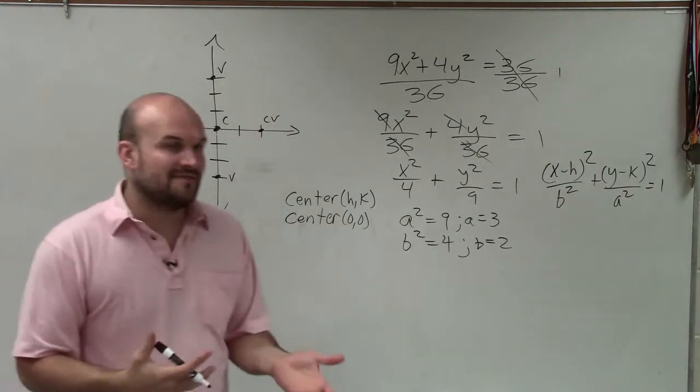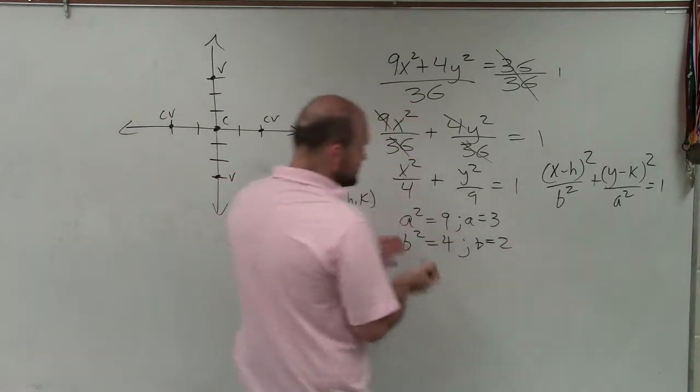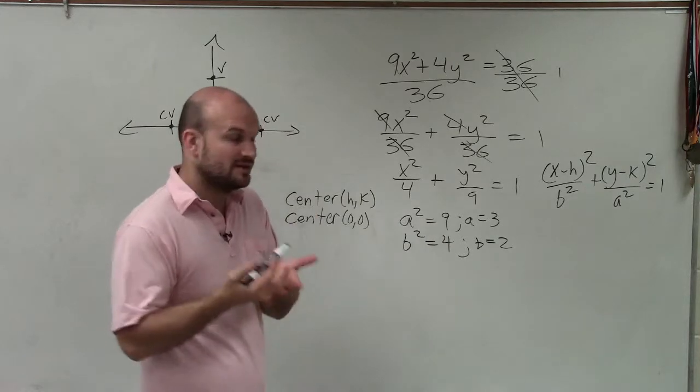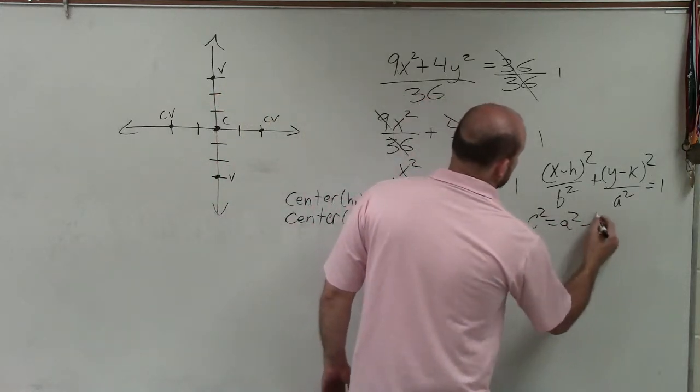The last thing to graph is we need to be able to determine the foci. And the foci is c². Well, we have a relationship between a², b², and c². And that relationship for ellipses is c² equals a² minus b².